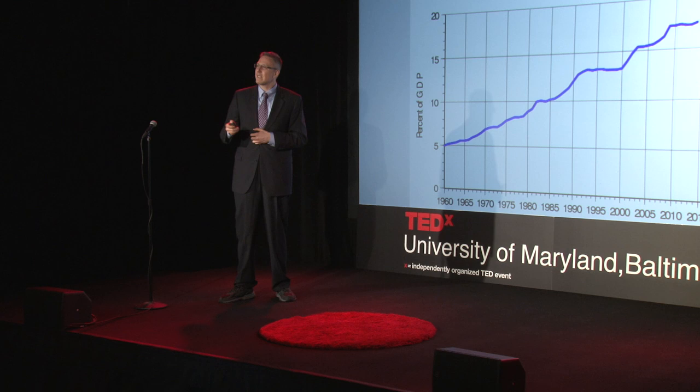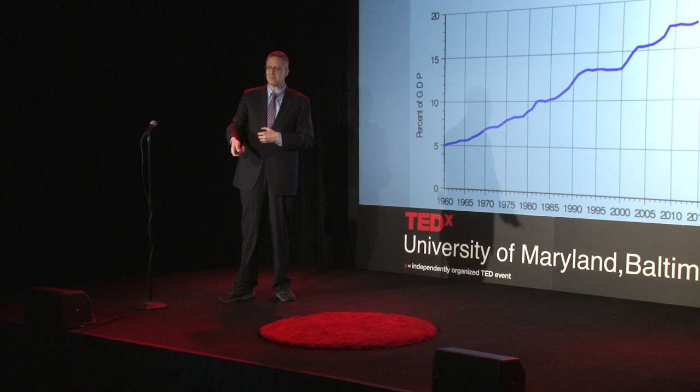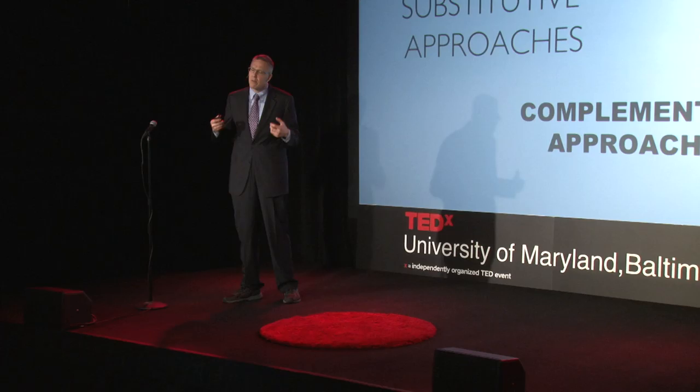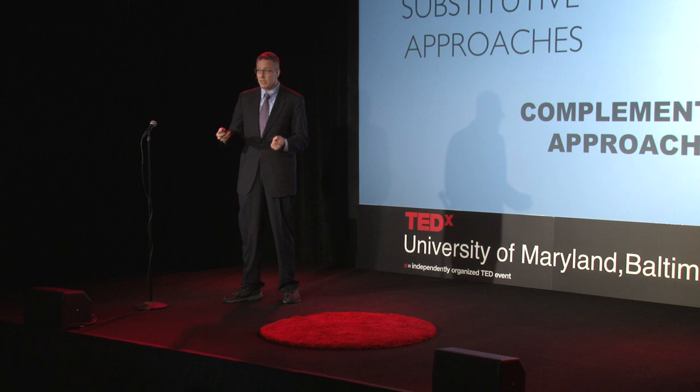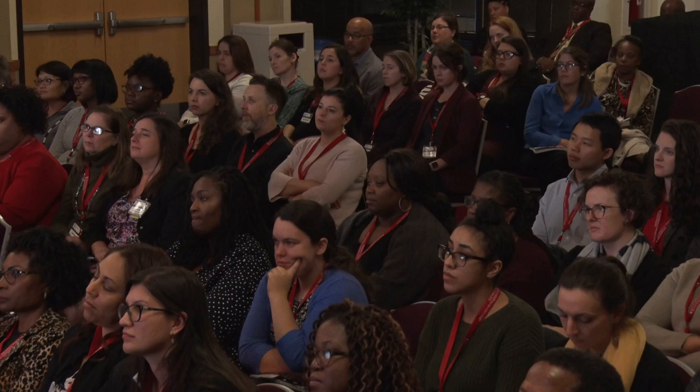The problem here is that this leads to a substitutive approach versus a complementary approach for technology. The substitutive approach that is really part of the cost disease narrative says that if manufacturing is so productive, the way we make human services like healthcare more productive is to make the workers within those sectors more like machines — we bring interchangeable parts and the logic of the assembly line to healthcare. And that's been supercharged recently by talk about artificial intelligence and robotics.